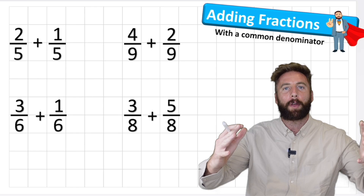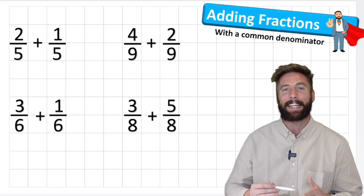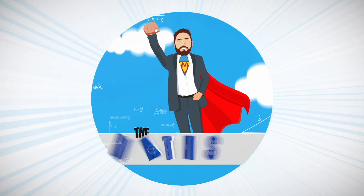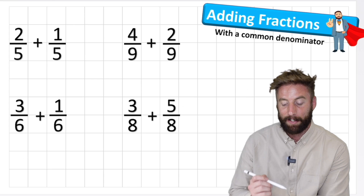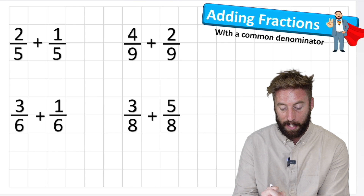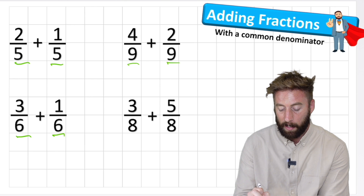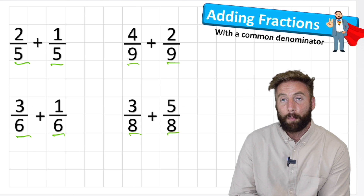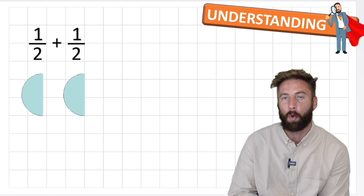Welcome back to The Maths Guy everybody. I am Matt The Maths Guy and today we're looking at adding fractions with the same denominator. This is very different to adding fractions with different denominators, which is our next lesson. You can see in our four questions all of our denominators are the same - two fifths and one fifth have five, three sixths add one sixth have six, four ninths and two ninths have nine, three eighths and five eighths have eight.